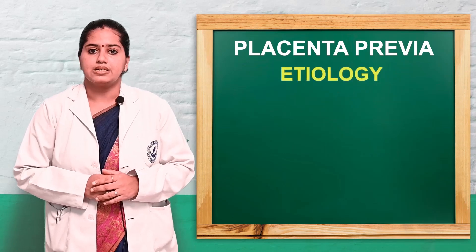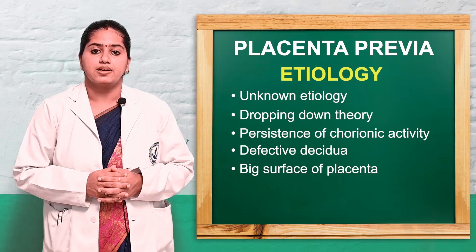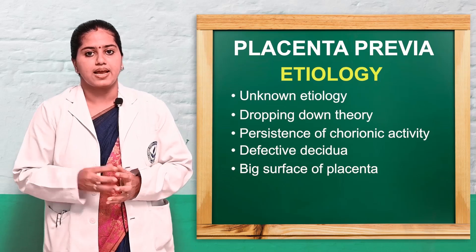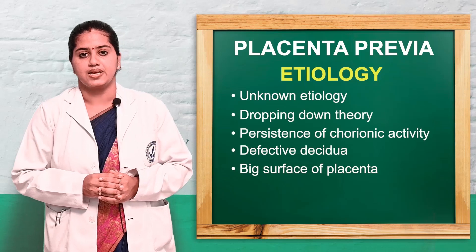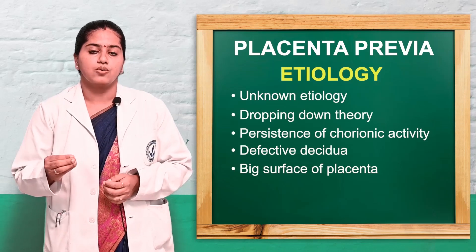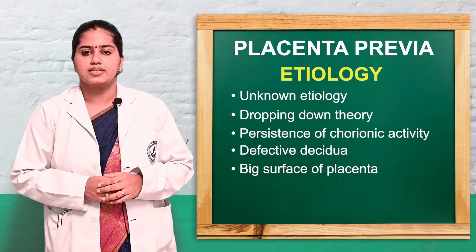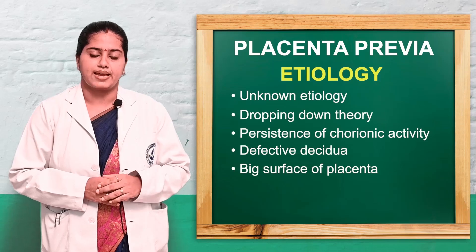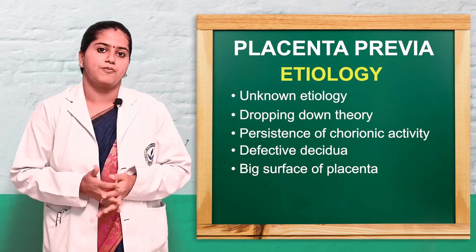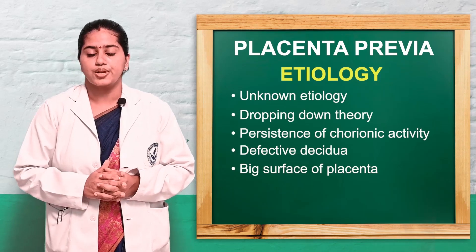The etiological factors include mainly unknown etiology and the dropping down theory — where the fertilized ovum directly drops into the lower uterine segment and the placenta implants there. Other causes include persistent chorionic activity, defective decidua in the upper uterine cavity leading to lower implantation, and large placenta in multiple pregnancies causing the placenta to lie in the lower uterine segment.